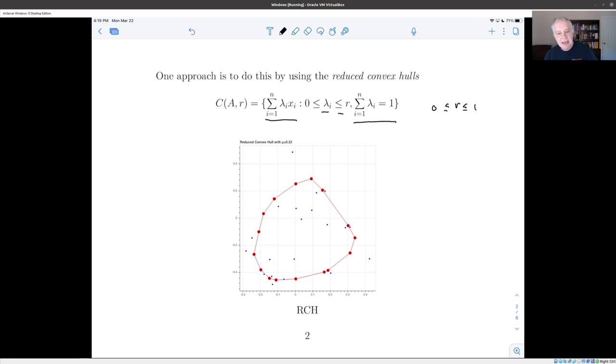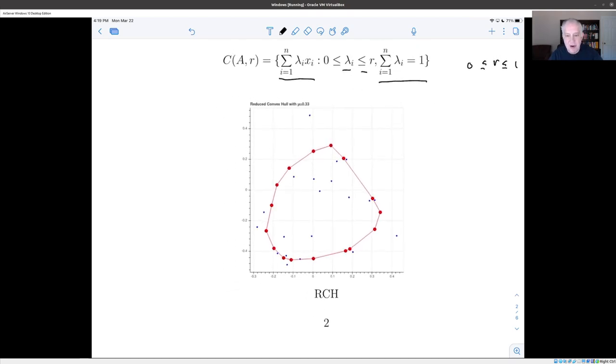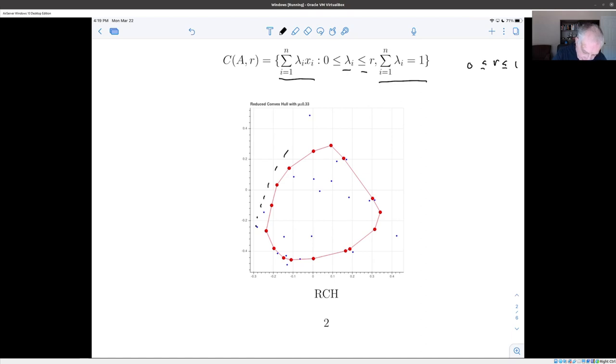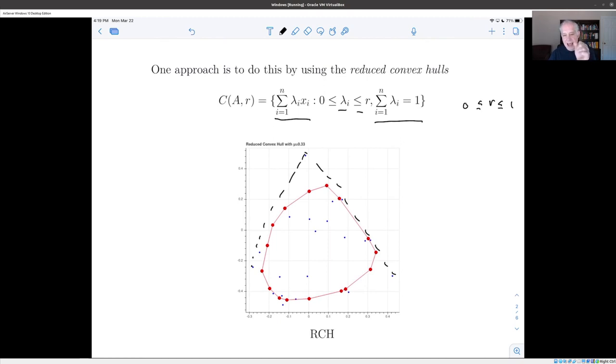And what this does is to shrink the convex hull inward a little bit. So I've drawn here what happens if you take the convex hull of the set of blue points with the parameter one-third, and the true convex hull is out here somewhere, and the reduced convex hull is shrunk inwards. If you shrink it as much as possible, eventually you're just going to get the center of mass of the set of points. So it kind of shrinks inward towards the center of mass. If you take r so that it's one over the number of points, then you get the center of mass.